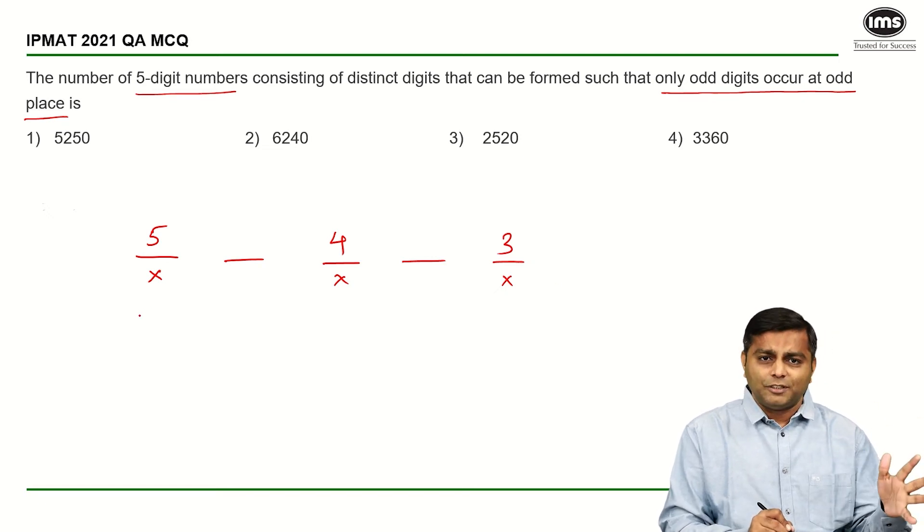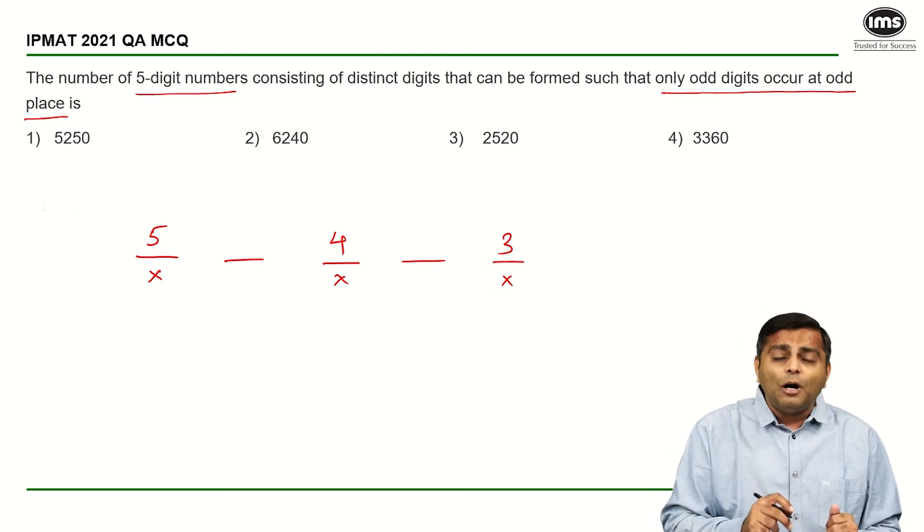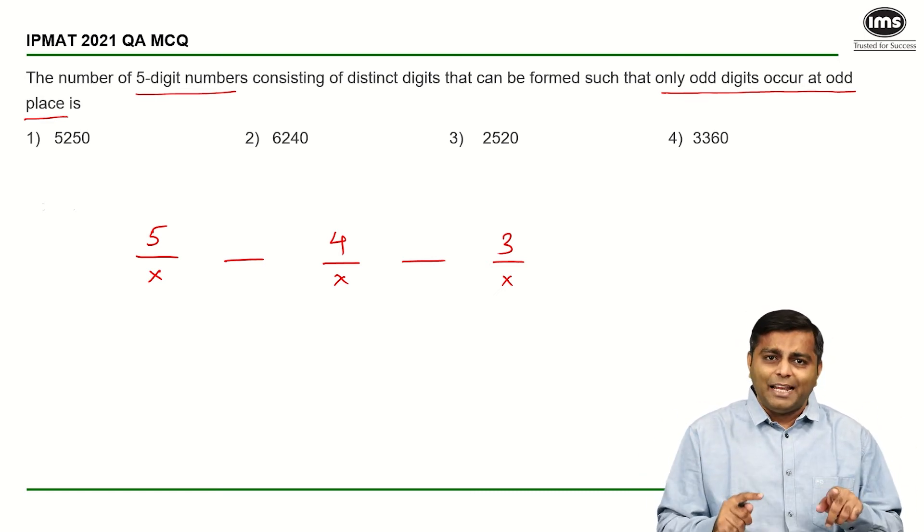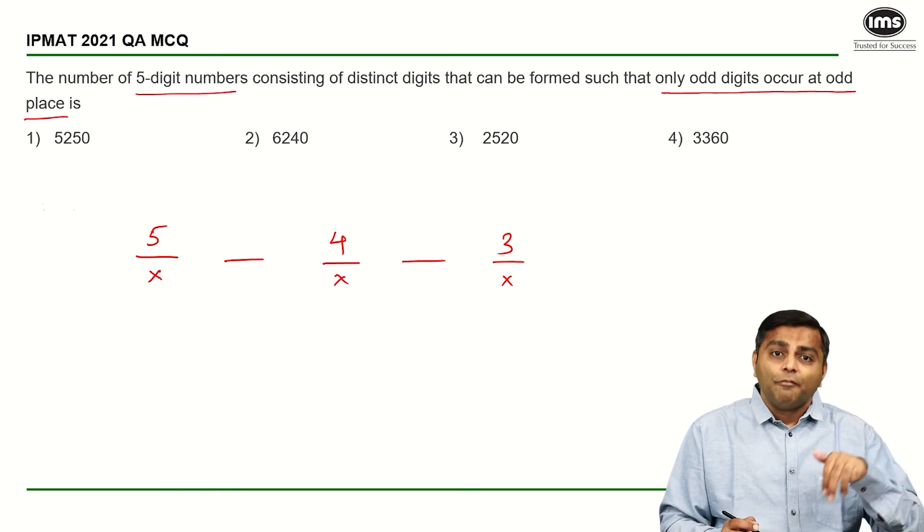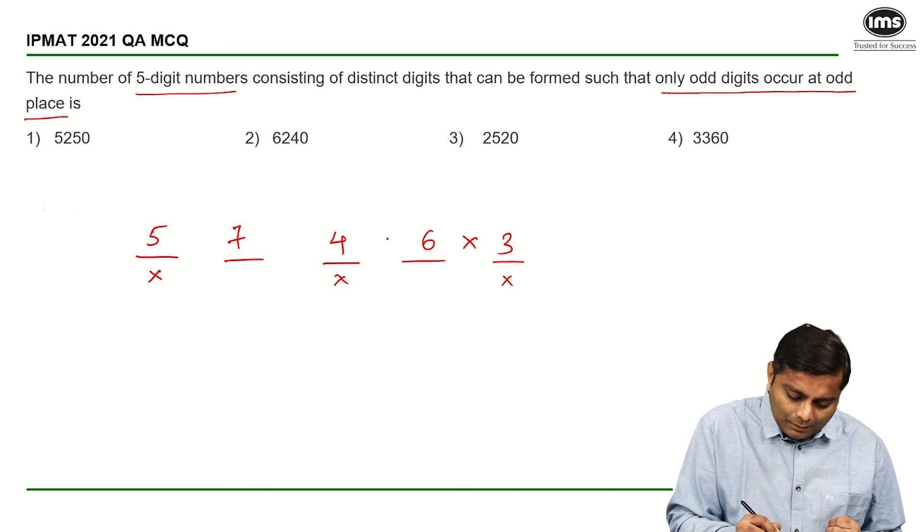For the first place we have 5 choices. For the third place we have 4, and for the fifth place we have 3 choices. Now out of the 10 digits that we have, we have used up 3 digits, which means now I am left with 7 choices and 6 choices. And that's about it.